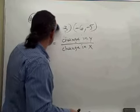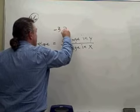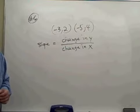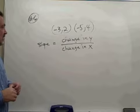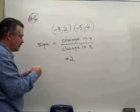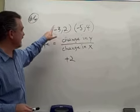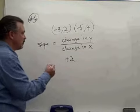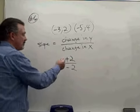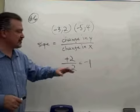Let's look at one more. The other example we had was the point (negative 3, 2) and the point (negative 5, 4). Looking at the change in Y and the change in X: Y went from 2 to 4, which is an increase of 2. Now X went from negative 3 to negative 5 — that's a decrease of 2, like going from 3 below to 5 below in temperature. Positive over negative is negative, and 2 divided by 2 is 1, so the slope is negative 1.